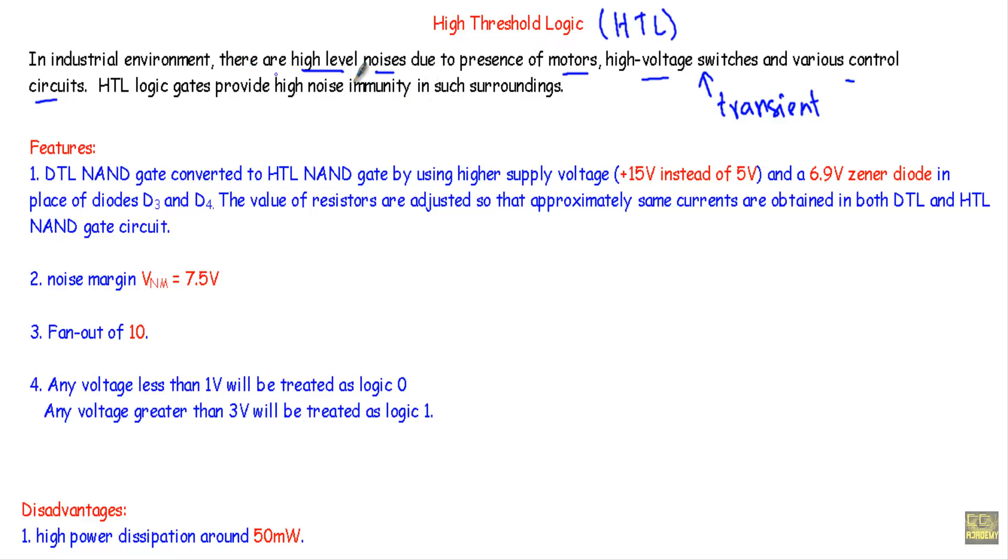There are some features of HTL logic circuits. Number one, we can form HTL logic circuits from DTL logic circuits. For example, DTL NAND gate can be converted to HTL NAND gate by using a higher supply voltage, 15 volts instead of 5 volts, and a 6.9 volt zener diode in place of the diodes D3 and D4.